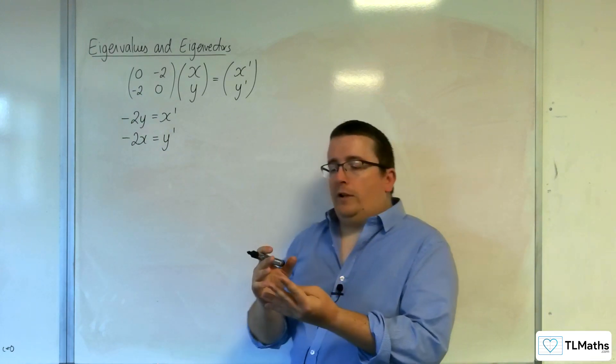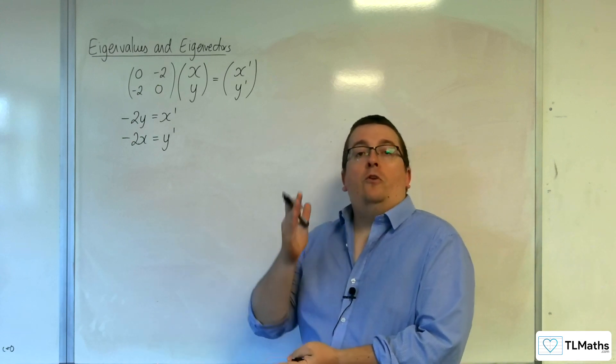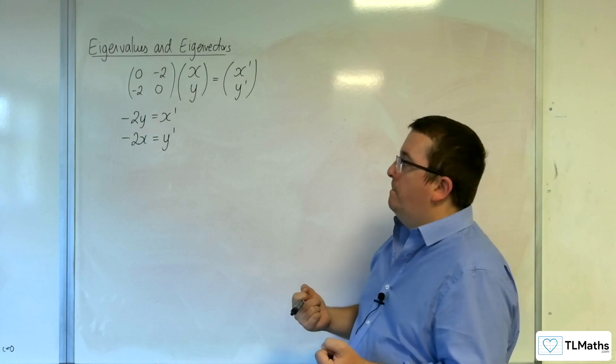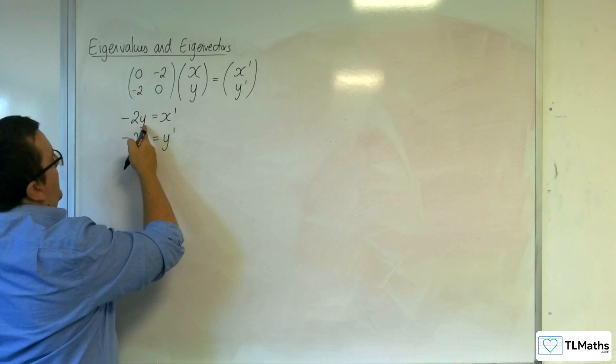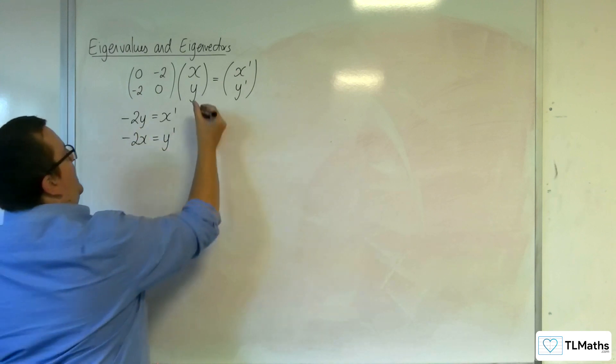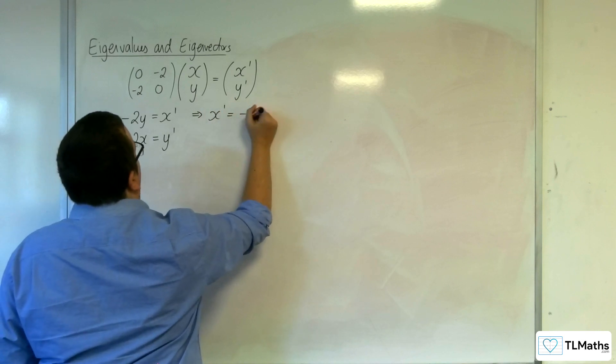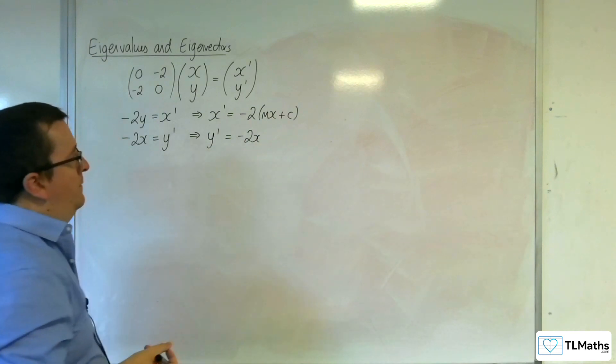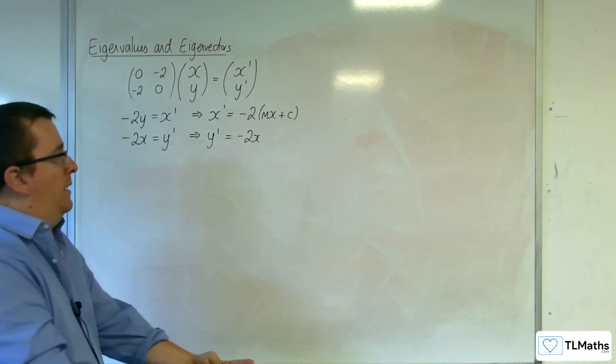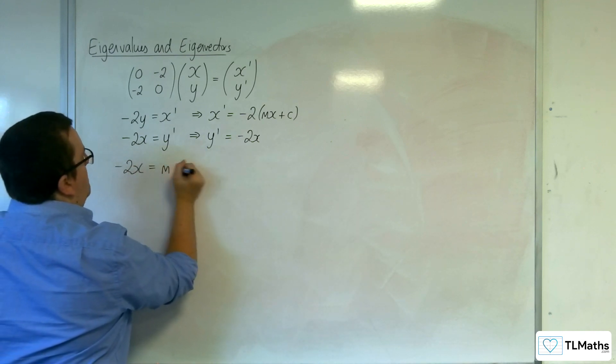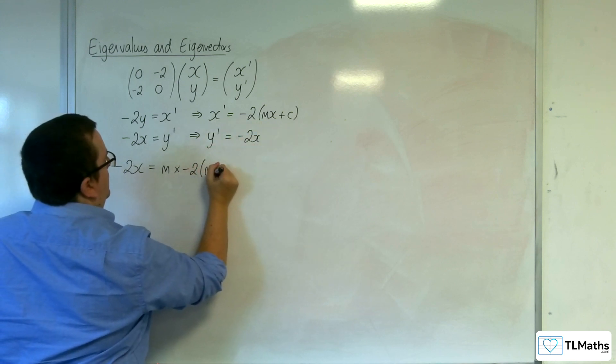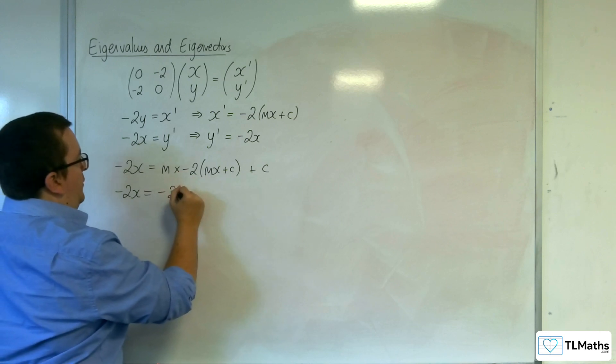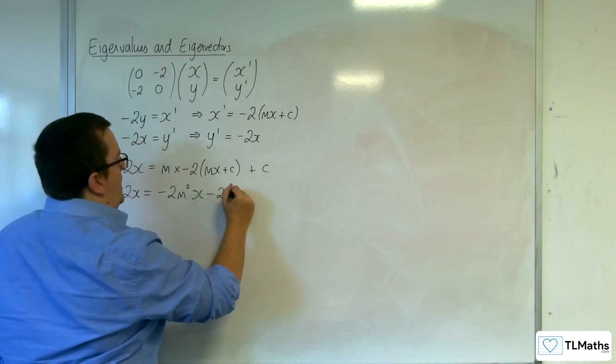Now, remember that we're looking at a line of the form y equals mx plus c. And because we've got invariant lines, we're also looking at y prime equals mx prime plus c, where the m and the c are the same in both cases. So that means we can replace the y in here with mx plus c. So x prime will be equal to minus 2 lots of mx plus c. And we've got the y prime equal to minus 2x.